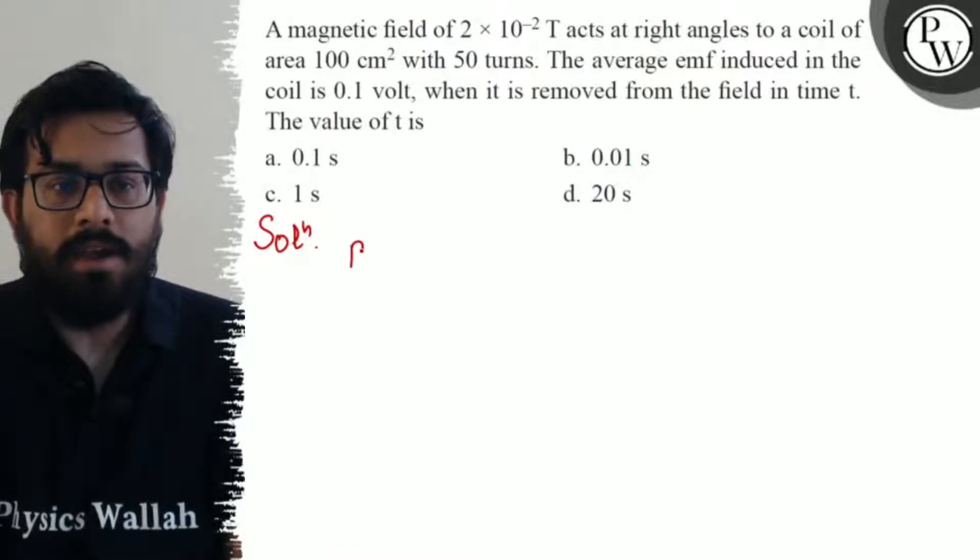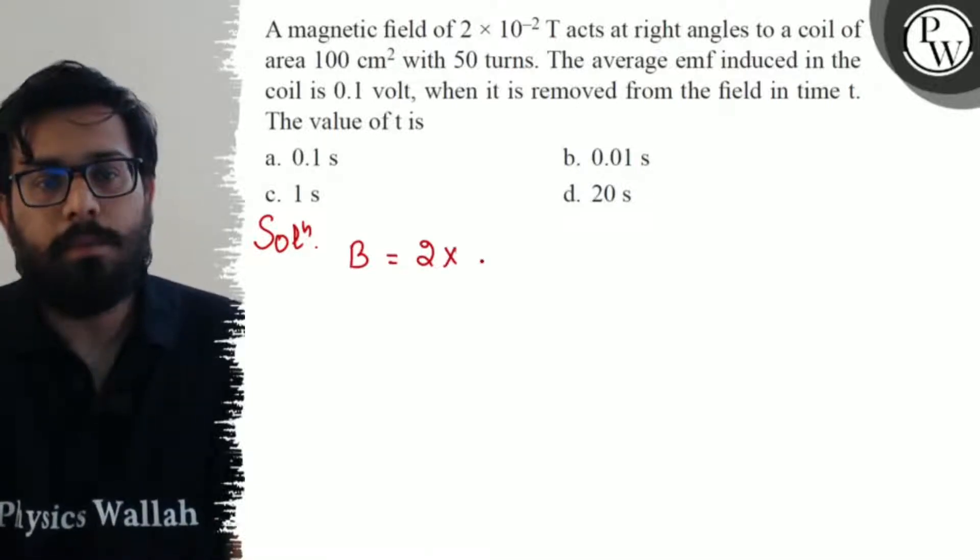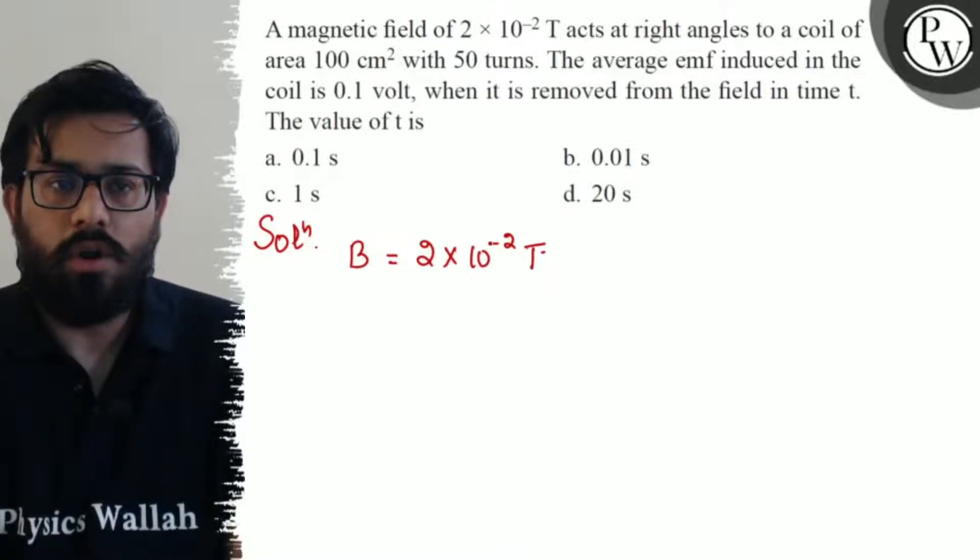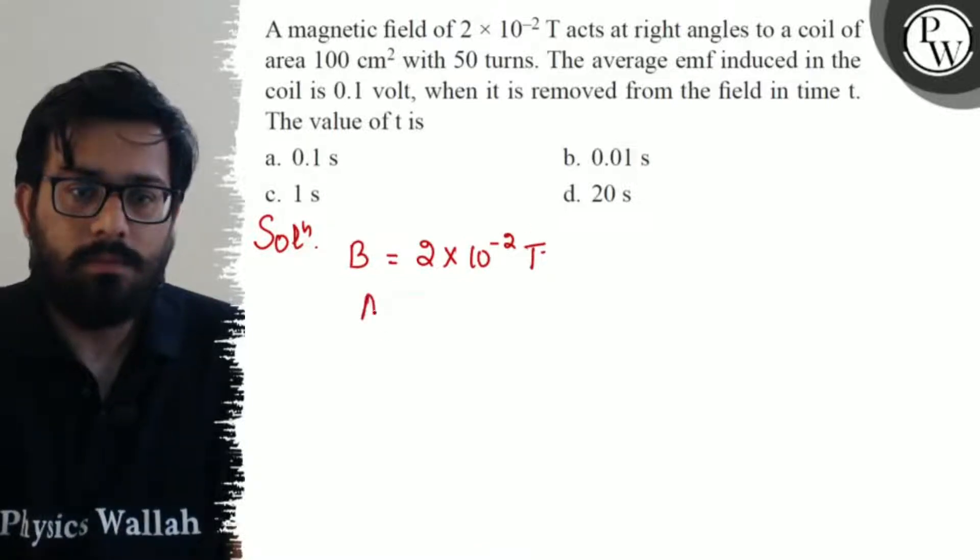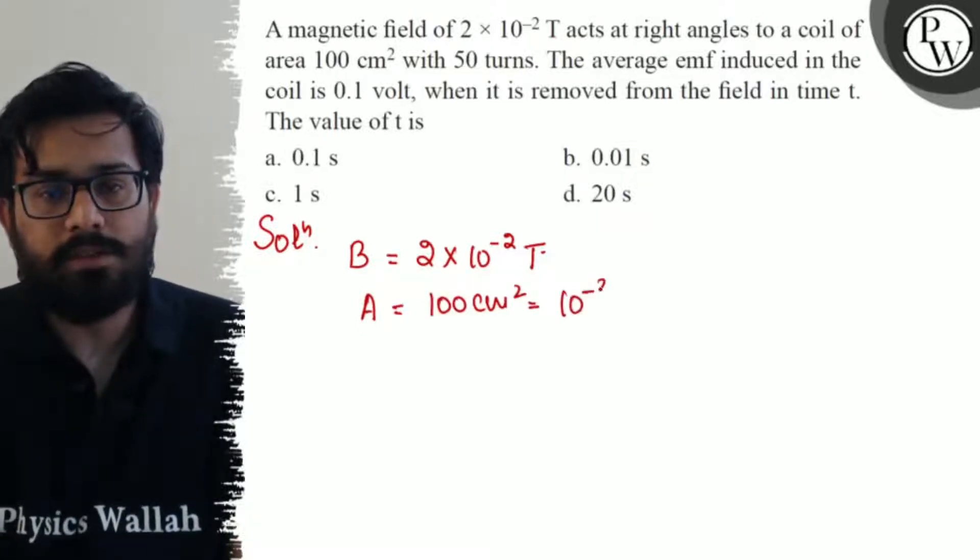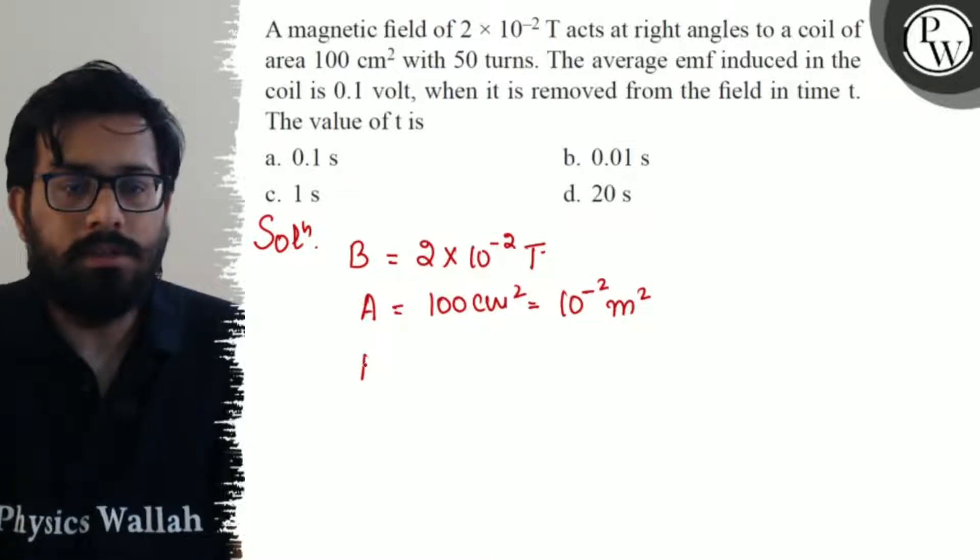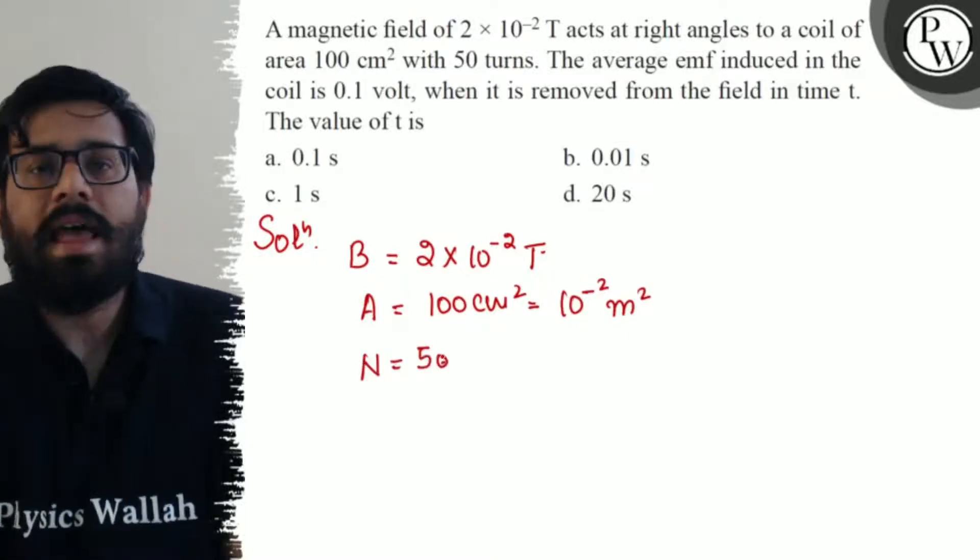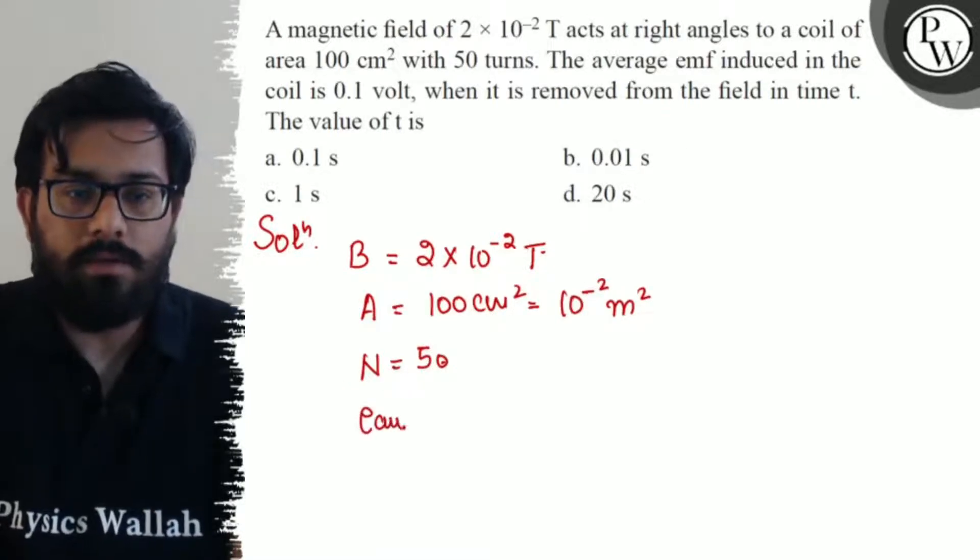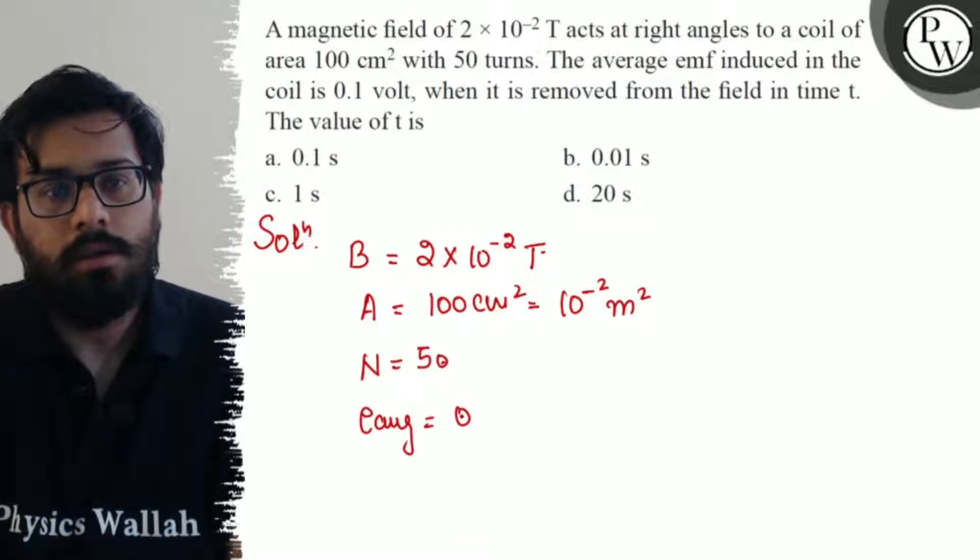Magnetic field is given as B = 2 × 10^-2 Tesla acting at a right angle to the coil of area A = 100 cm², which can be written as 10^-2 m². The number of turns N = 50.